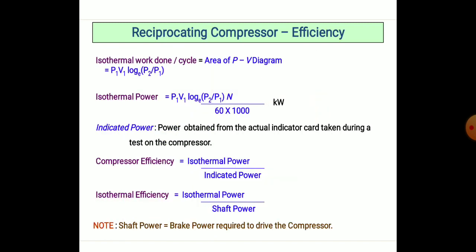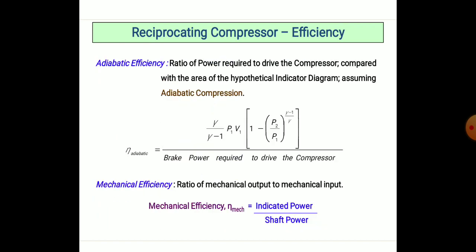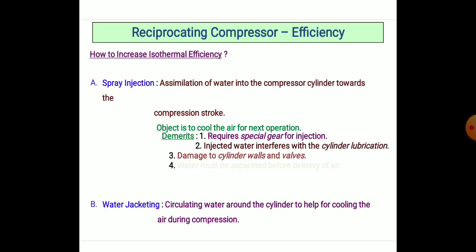The isothermal efficiency is the ratio of isothermal power to the indicated power. The overall efficiency relates to the shaft power, which is the brake power required to drive the compressor. The mechanical efficiency of the reciprocating compressor is the ratio of indicated power to shaft power.